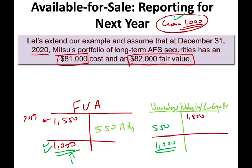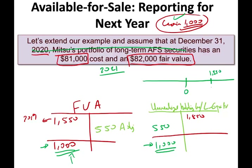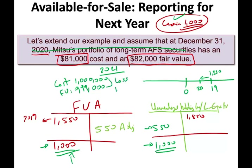Taking this one more year — in 2021, the portfolio has a cost of $1,000,000 and a fair value of $999,000, so there is a loss of $1,000. We are moving from a gain of $1,000 to a loss of $1,000. The fair value adjustment should now carry a credit balance of $1,000.